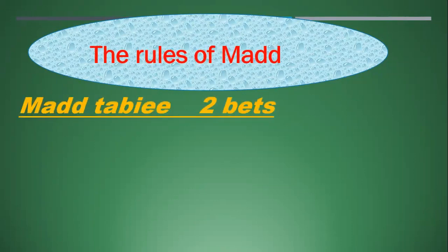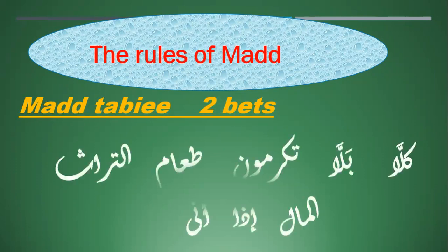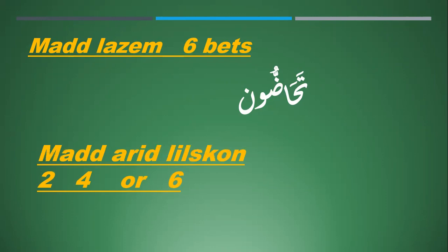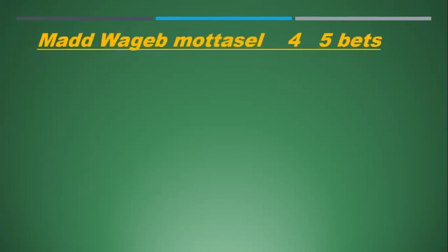Mad Tabi'i: two beats. We can find Mad Tabi'i in Mad Lazim: six beats — the Mad followed by a mushaddad letter. Mad Tabi'i: two or four or six beats — Al-Yateem, Al-Miskeen. Mad Wajib Muttasil: four or five beats — the Mad followed by a Hamza in the same word, such as Jaa-a, Ji-a.